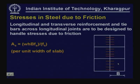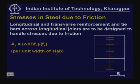We can provide longitudinal or transverse reinforcement and tie bars across longitudinal joints to handle these stresses. The area of reinforcement to be provided is given by an expression where B is the width of the panel and Fs is the allowable stress.